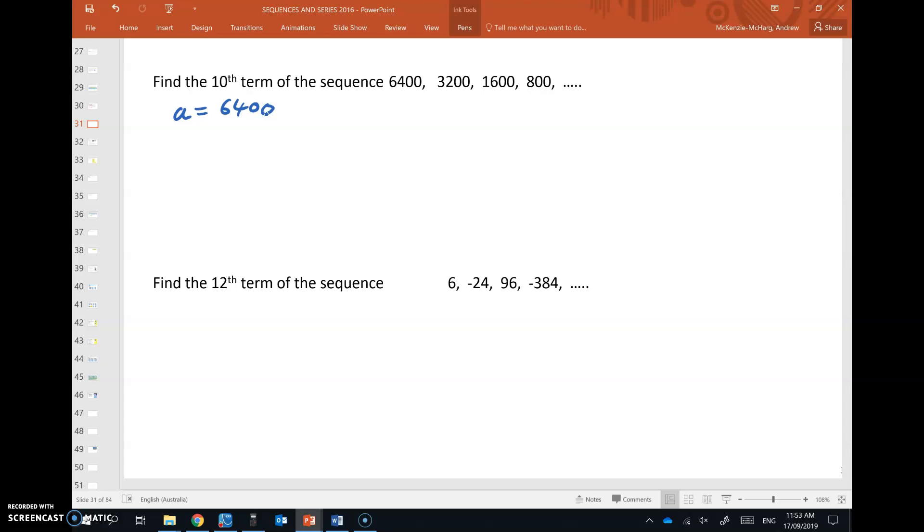Okay, and our common ratio. How are we getting from one term to the next? Well, if we're unsure, let's divide terms and see if we get a repeat. 0.5 and 1600 over 3200 also gives 0.5. So clearly our common ratio is 0.5. We're multiplying by 0.5 each time.